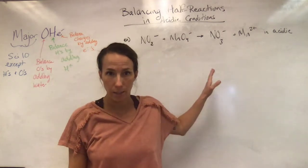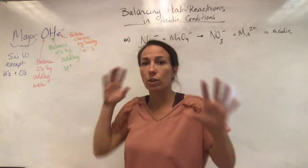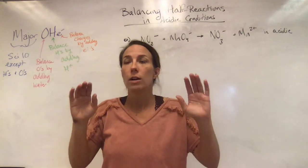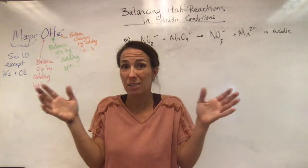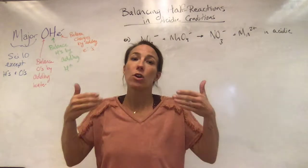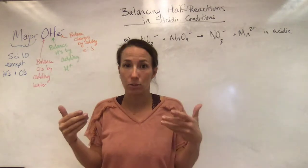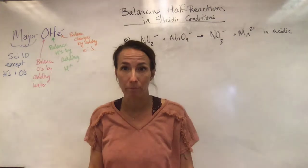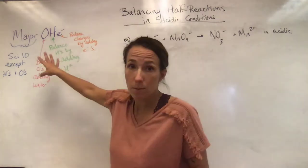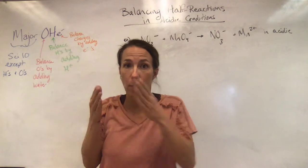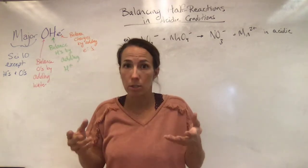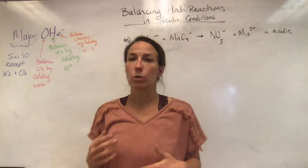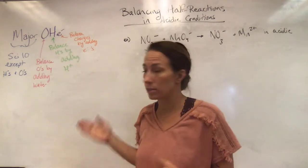Then you move to your hydrogens and balance those by adding H pluses, because these are in acidic conditions and acidic means H+. After that, the charges on the left-hand side and right-hand side won't be balanced. All the nuclei will be balanced, but not the electrons, not the charges — so we add electrons to make both sides' charges equal. This takes some practice, but if you have it memorized and follow the steps, you can't get these wrong.